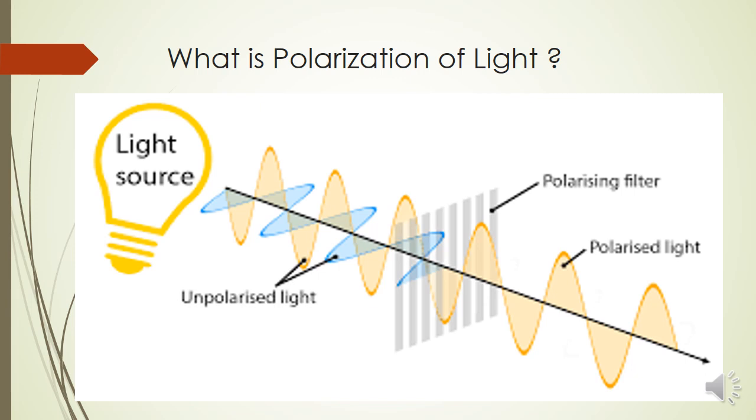You have horizontal as well as vertical two components which are there. When light is vibrating in all directions, it is called unpolarized light. Unpolarized light is when light is not having one single direction rather having multiple directions of vibration.